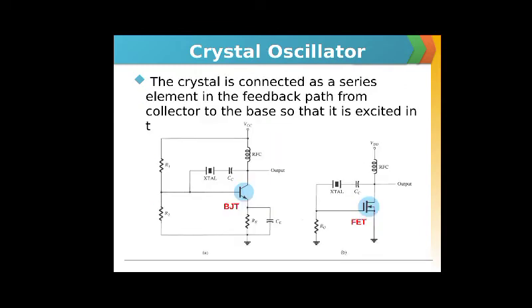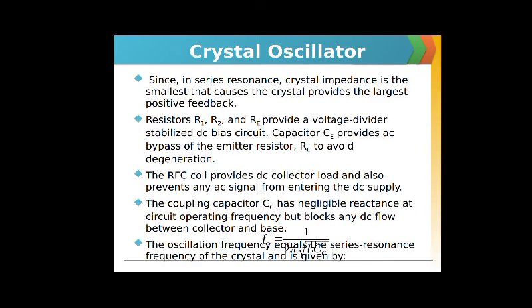The crystal is connected as a series element in the feedback path from the collector to the base, as shown in the figure. Since at series resonance the crystal impedance is the smallest, the crystal provides the largest positive feedback. Resistors R1, R2, and RE provide a voltage divider stabilized DC bias circuit, and capacitor CE provides AC bypass of the emitter resistor RE to avoid degeneration.